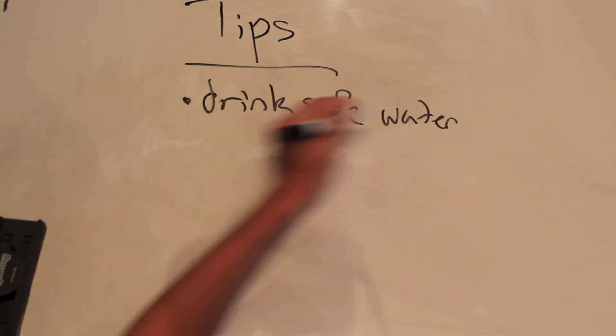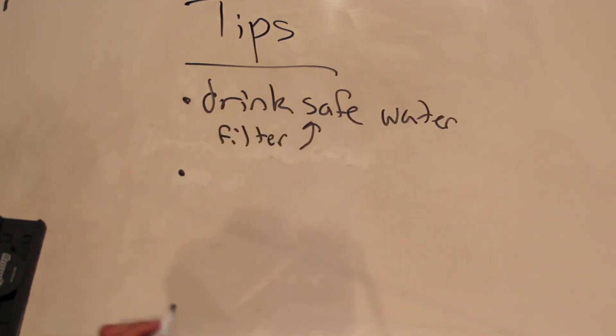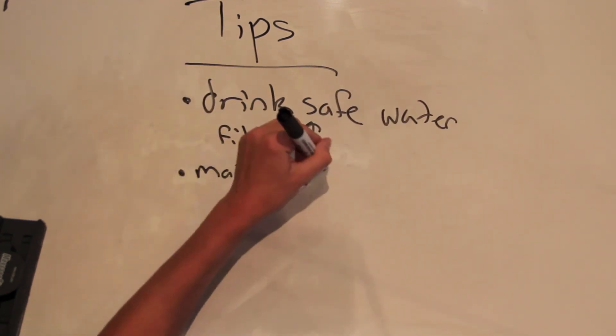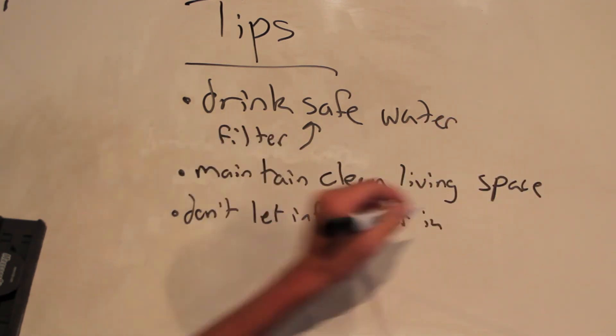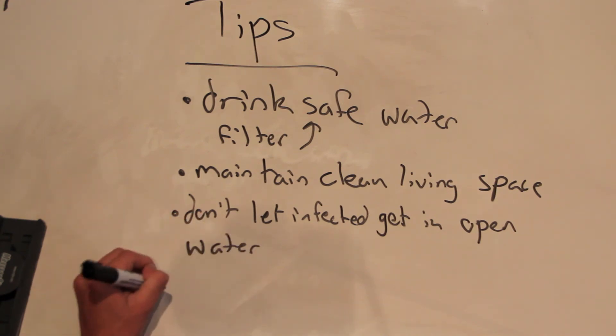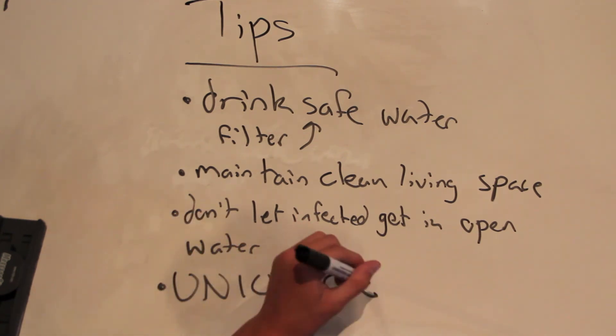Some tips to prevent this disease are drinking safe water, like using a filter. You can maintain a really clean living environment, so you don't want any dirt in your water or anything dangerous like that. And one more is like what I said before about keeping away from open water.